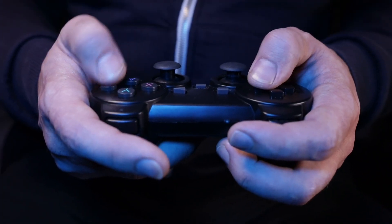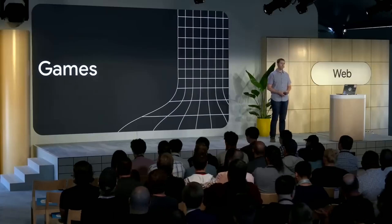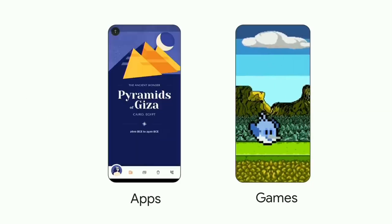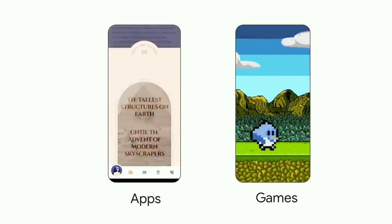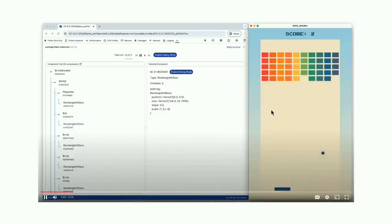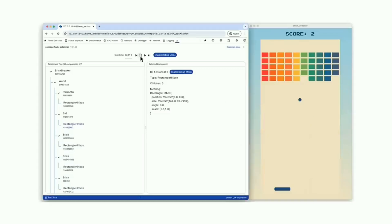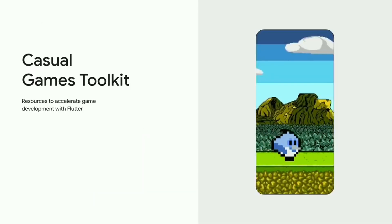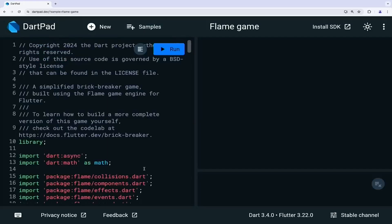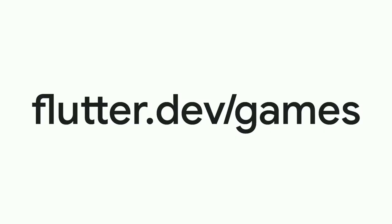Game development is becoming more and more popular, and Flutter has a lot to offer here too. The Flutter team has highlighted the integration of the Flame Engine, a two-dimensional game engine designed specifically for Dart and Flutter. Flame provides developers with essential gaming features like a game loop, physics, and two-dimensional collision detection. Thanks to the tight integration with Flutter DevTools, game developers can easily debug and optimize their game elements. With resources like the Casual Games Toolkit and tutorials on DartPad, getting started is a breeze. For more information, visit flutter.dev/games.